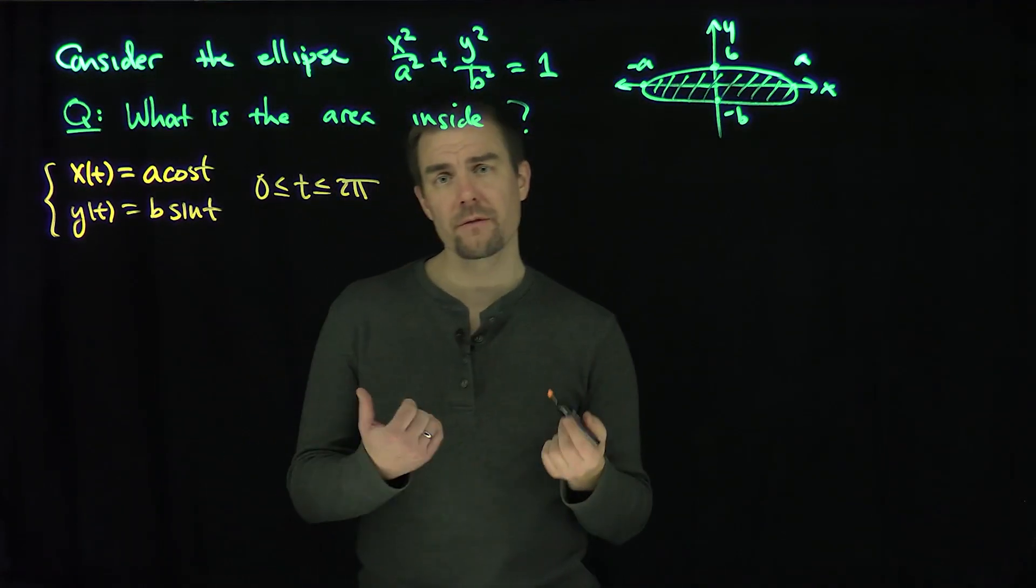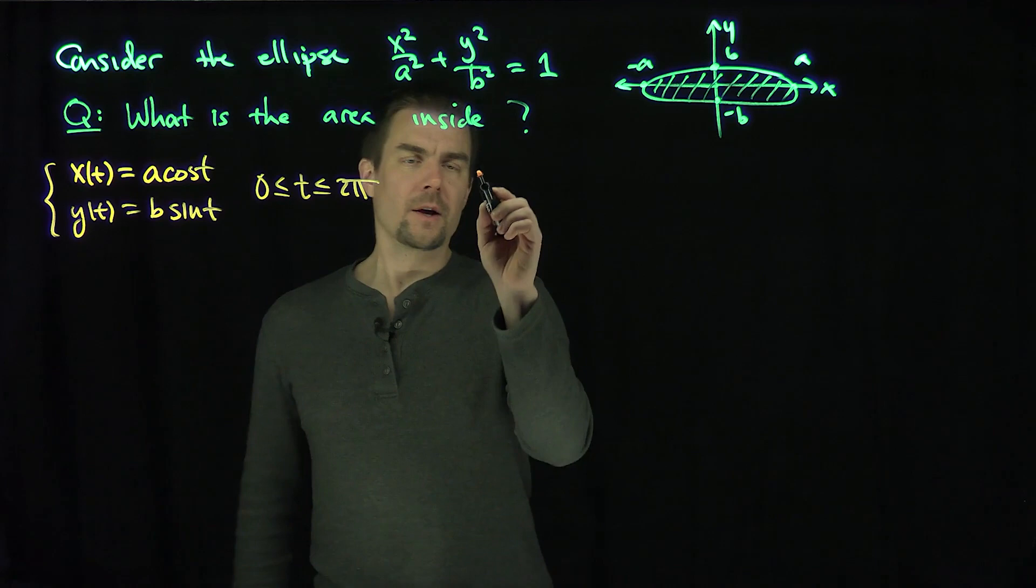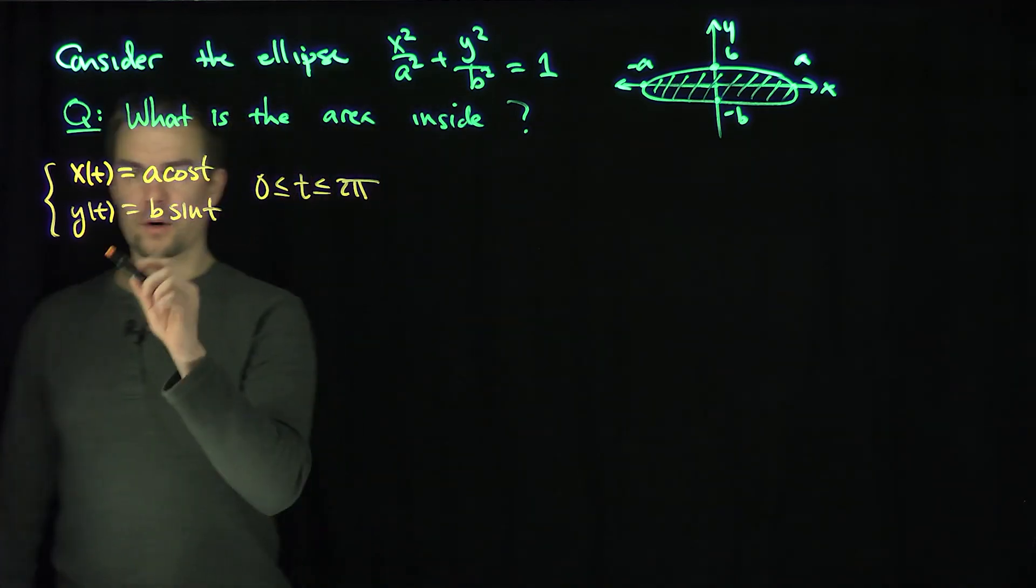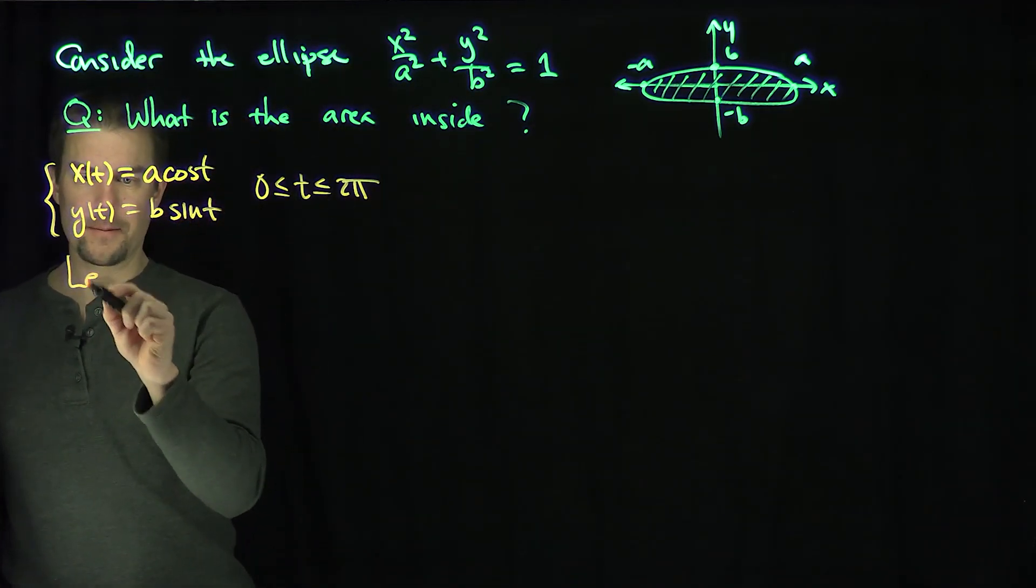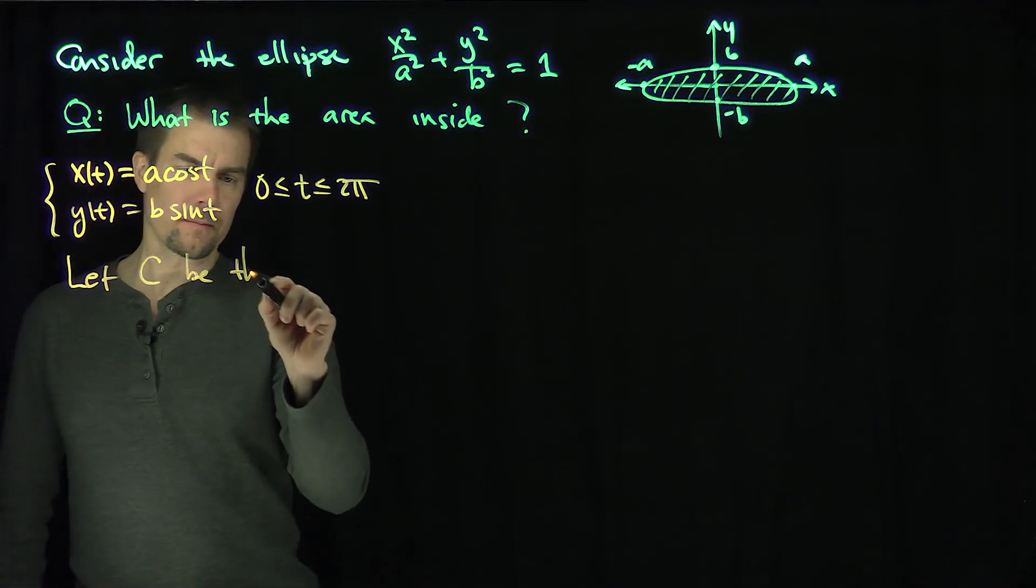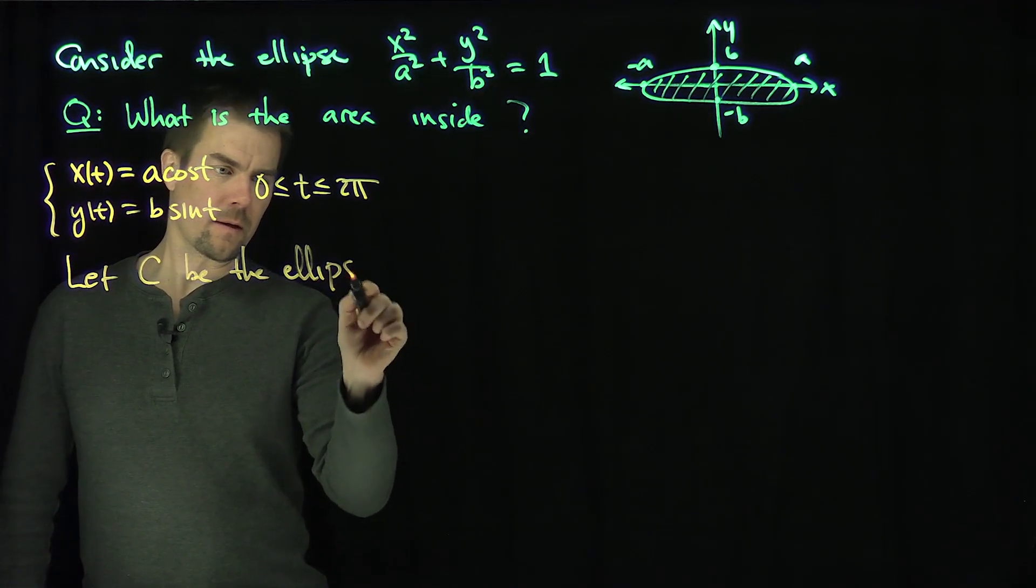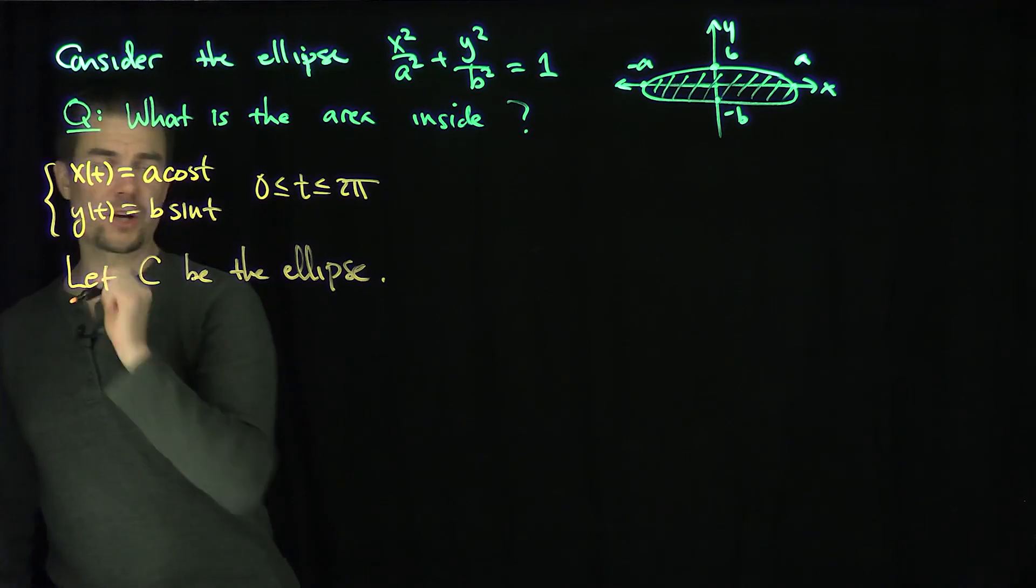Now, what I can do is I'm going to choose a special vector field and apply Green's theorem. So if we let c be the curve, that's the boundary ellipse, let c be the ellipse. We have its parameterization right here.